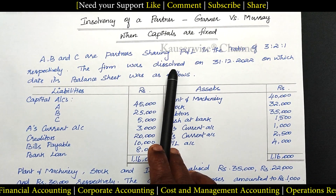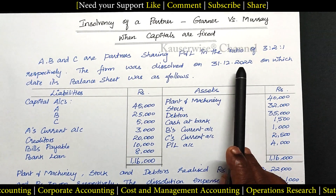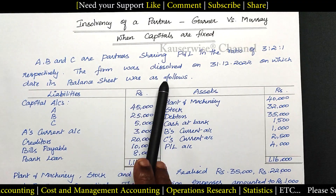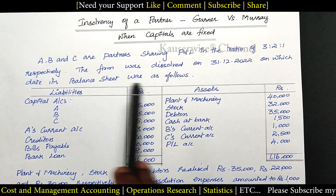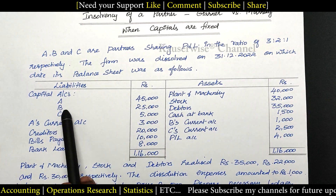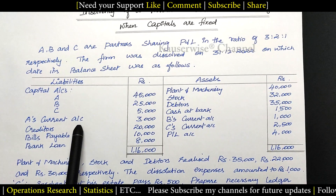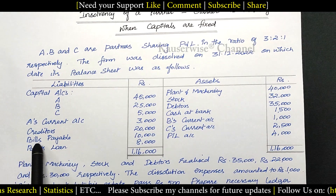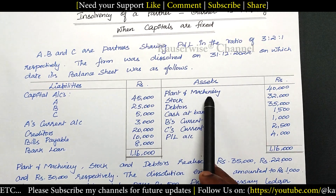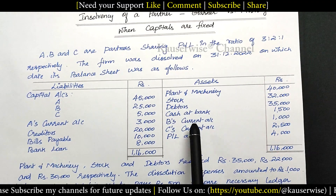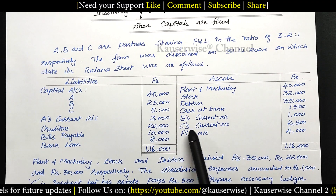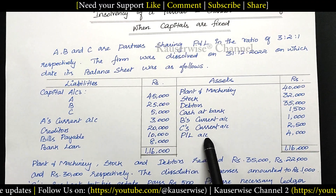The firm was dissolved on 31st December 2022, on which date its balance sheet was as follows. On the liability side: capital accounts of A, B, C; A's current account; creditors; bills payable; bank loan. On the asset side: plant and machinery; stock; debtors; cash at bank; B's current account; C's current account; and profit and loss — this is a loss, a debit balance.